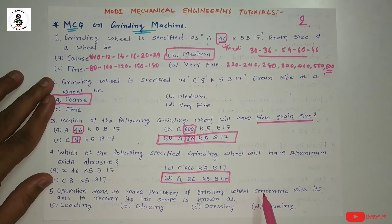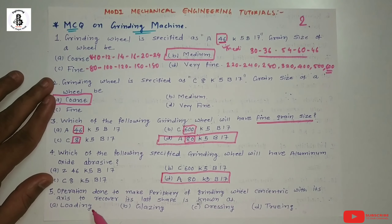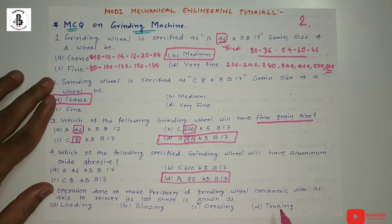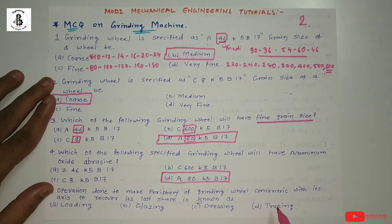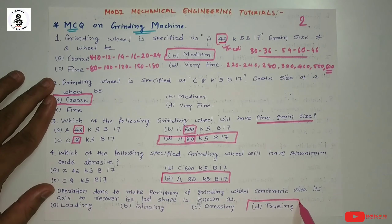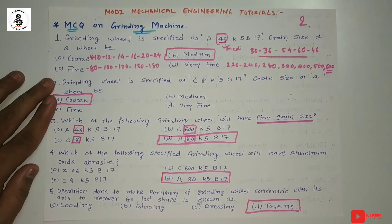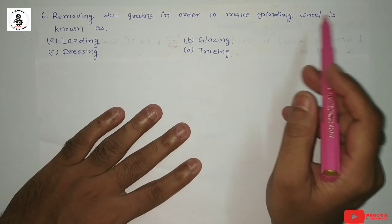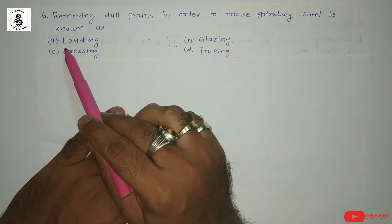Question 5: The operation done to make the periphery of a grinding wheel concentric with its axis and to recover its lost shape is known as: Option A: loading, Option B: glazing, Option C: dressing, Option D: truing. By the application of truing, you recover the lost shape of a grinding wheel, so the answer is option D: truing.